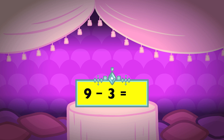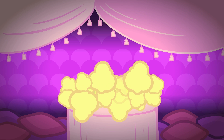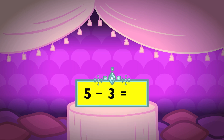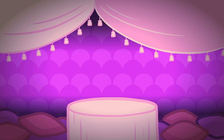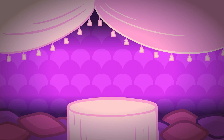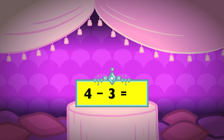Nine minus three equals six. Five minus three equals two. Eight minus three equals five. Four minus three equals one.